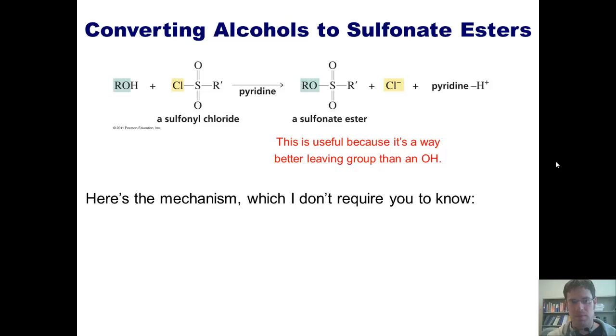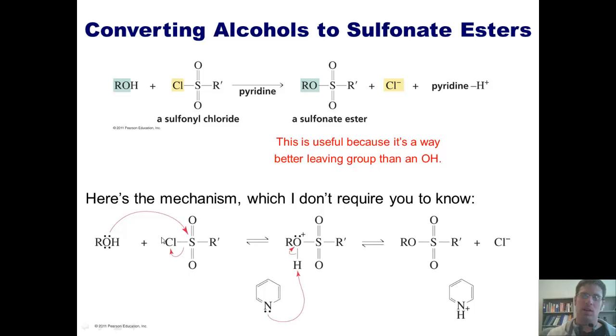Here's the mechanism of this transformation, which once again, I don't require you to know, but I'm going to show you just in case you are interested. The oxygen lone pair electrons come out, form a bond with the sulfur, kick off the chloride, and give me this intermediate. The pyridine base strips this proton and pumps these electrons into the positively charged oxygen to neutralize it, giving me my sulfonate ester product.